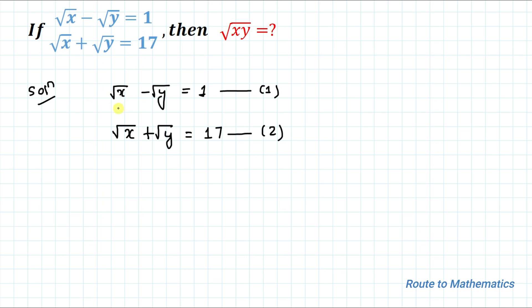Whenever we have two unknown variables, we have two methods to find out their values: elimination method and substitution method. In the next step, we are going to apply elimination method by adding both equations.